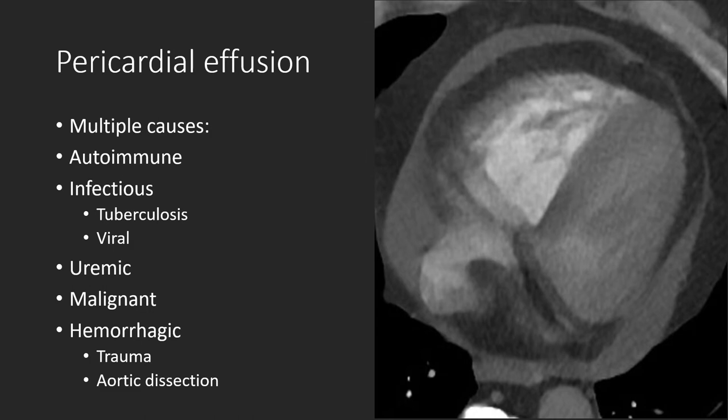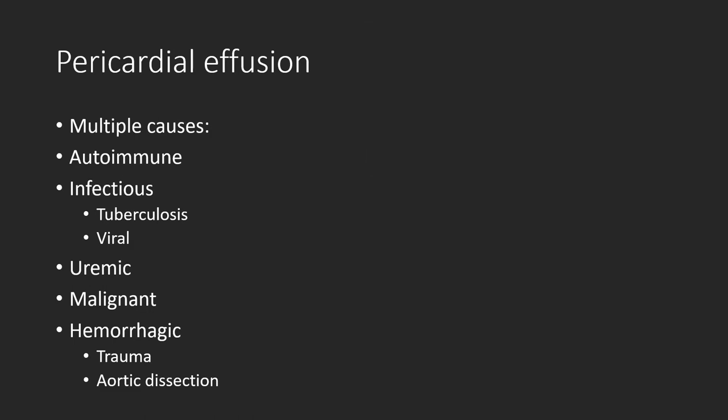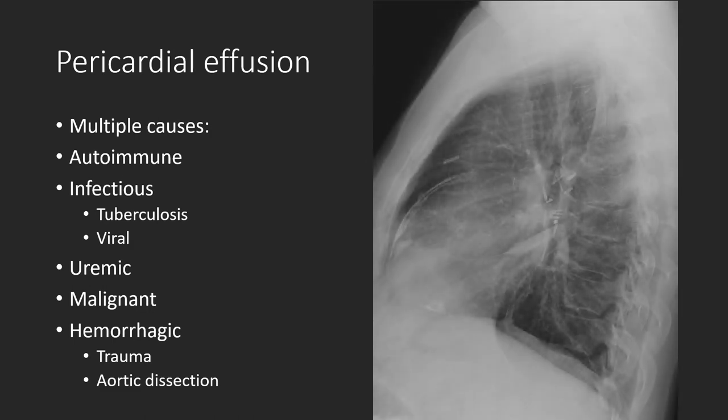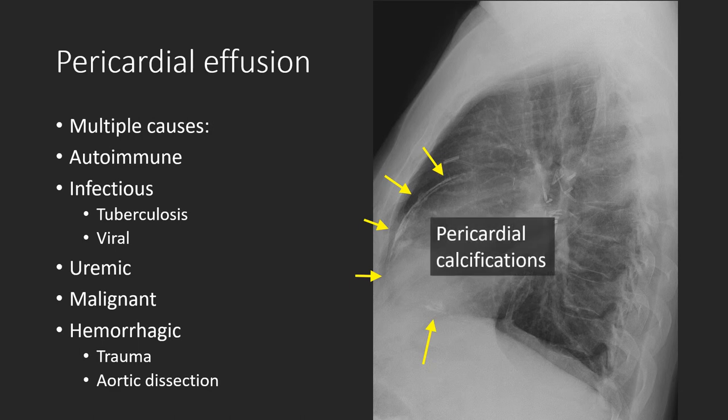There are many causes of pericardial effusion, ranging from autoimmune diseases, infections such as tuberculosis, malignancy, and hemorrhage. Inflammatory pericardial effusions can result in complications, as seen in this lateral view. Notice the dense white lines surrounding the heart, representing pericardial calcifications from prior uremic pericarditis. Pericardial calcifications can result in impaired diastolic filling of the heart, known as constrictive cardiomyopathy.